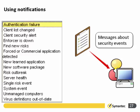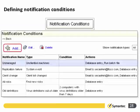Here we can see the current notification conditions that have been set up. There's a notification to warn about unmanaged or uncliented machines — it adds an entry to the database and runs a batch file, probably to install the client. Other available actions include emailing to an address or just adding a database entry.